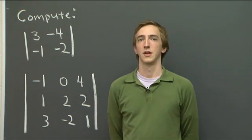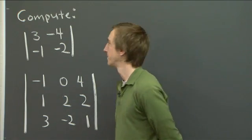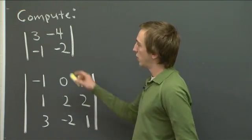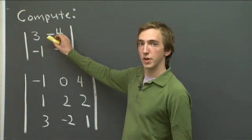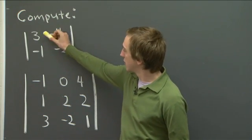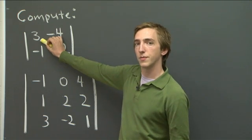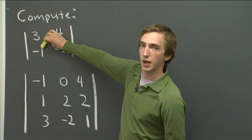Welcome back. So why don't we get started with the 2 by 2 matrix first. So remember, when we compute a 2 by 2 determinant, we multiply the entries in the main diagonal, and we subtract from that the product of the entries in the off diagonal.